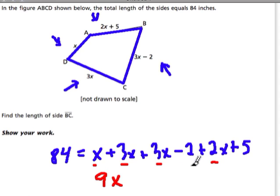And then we have our numbers. We have a negative 2 and a 5. If we add up negative 2 and a 5, we have 3. So 9x plus 3 is 84.